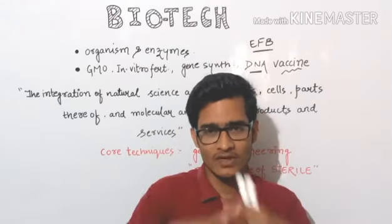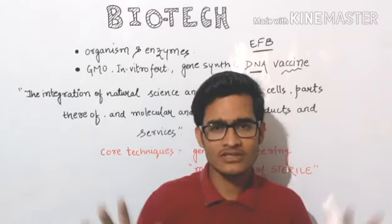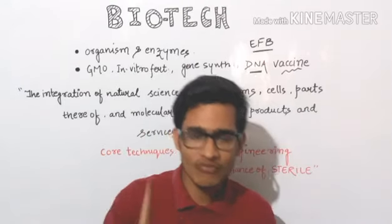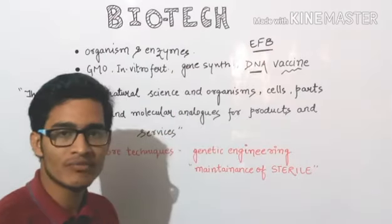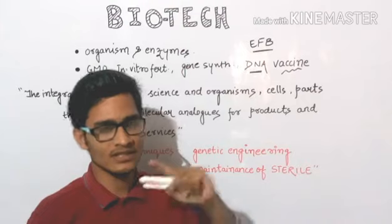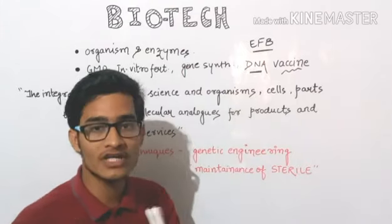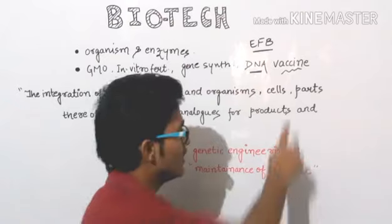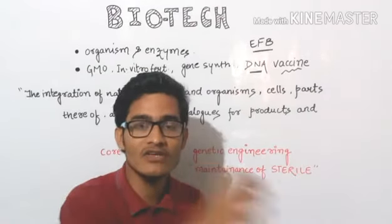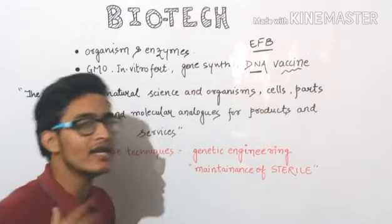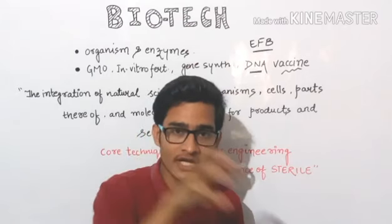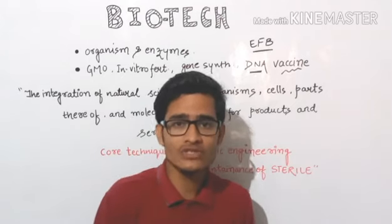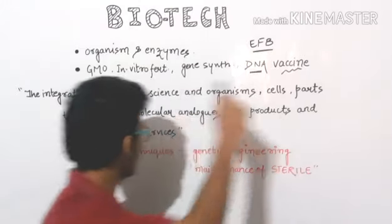This means biotechnology is the integration of natural sciences — all the things present in nature — with organisms, cells, and parts of those organisms. We can utilize the whole organism, the cells of that organism, parts thereof, as well as molecular analogues — even the molecules present inside the body of an organism — for products and services. For example, chemicals such as enzymes and hormones can be utilized by humans for products and services. One important example is insulin, which was initially derived from pigs, but later we synthesized artificial insulin using biotechnology.